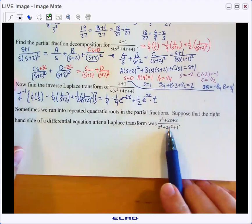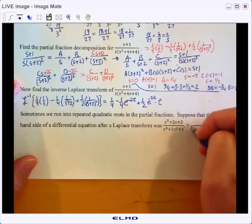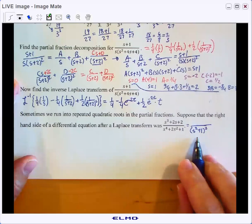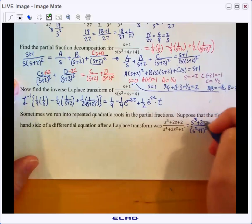Where stuff was a little bit harder, it was this guy right here, and we happen to recognize that the bottom was a quadratic factor that was repeated because it's squared. How would we handle that?